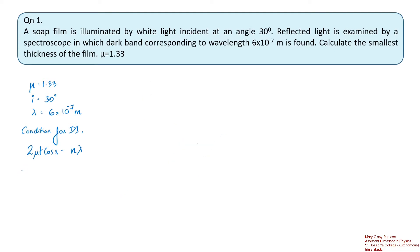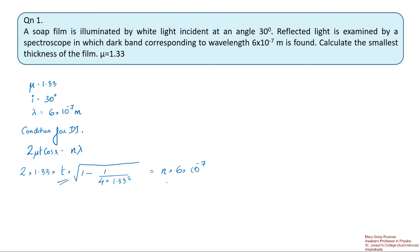We can use this relation for cos r in the equation. So this becomes: 2 × 1.33 × t × √(1 − sin²i / 1.33²) = n × 6×10⁻⁷. We have to calculate the smallest thickness of the film. On the left side we have t and on the right side we have n, so t will be least when n is least.